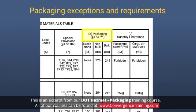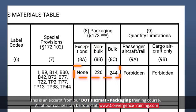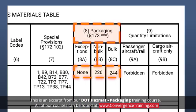Packaging exceptions and requirements are detailed in sections of the HMR that are referenced in Columns 8A, 8B, and 8C. The entries in these columns refer to sections in Part 173 of the HMR.